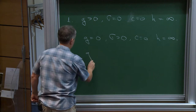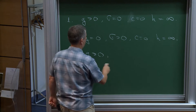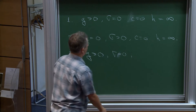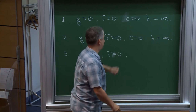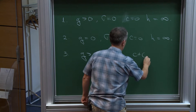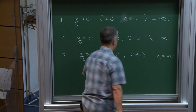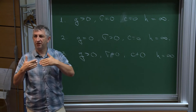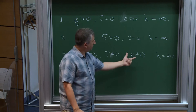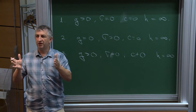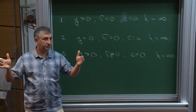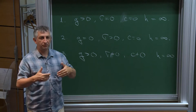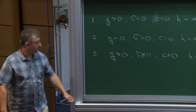The third problem: gravity present, no surface tension, non-zero vorticity, again in infinite depth. Here the vorticity does not have a sign, because you can always change the sign of the vorticity by reversing the time direction. Introducing vorticity breaks the symmetry between waves moving left and waves moving right, so the equations are no longer symmetric with respect to time reversal — otherwise water wave equations are fully reversible.